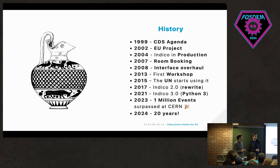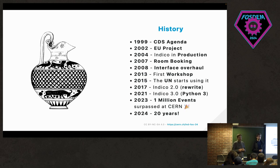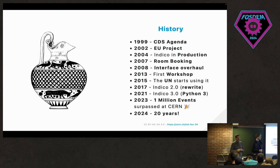This first attempt was called CDS Agenda. Then in 2002, the opportunity came with a European project focused on a conferencing platform, so they put the two ideas together — and that's when Indico was born. It went into production in 2004. In 2007 a room booking system was added, in 2008 a full interface overhaul, then in 2013 the first workshop. Word of mouth started spreading, and in 2015 the United Nations adopted it, starting a fruitful collaboration which continues to this day.